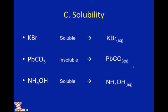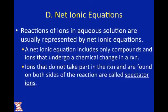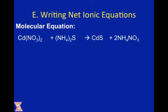Net ionic equations is the last thing we need to talk about in this section. Net ionic equations, or reactions of ions in aqueous solution, include only compounds and ions that undergo a chemical change. Ions that do not take part in the reaction and appear on both sides are called spectator ions. Let's look at an example.